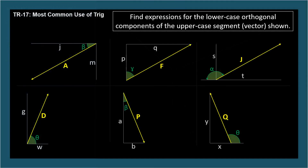Here are some more examples for you to try. For each diagram, find expressions for the lowercase orthogonal components of the uppercase yellow vector. No calculators — just show the proper expression using sine and cosine. Let's do the first one together. We can express m and j in terms of a and the trig function of beta. j is adjacent to beta, so j equals a cosine beta. m is the same length as the opposite segment, which is opposite to beta, so m equals a sine beta and j equals a cosine beta.